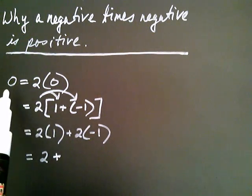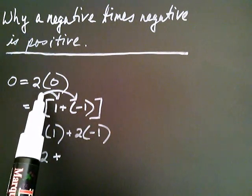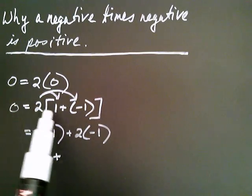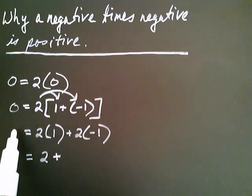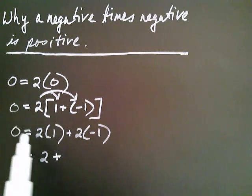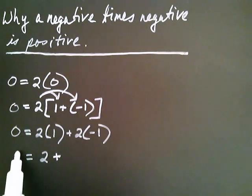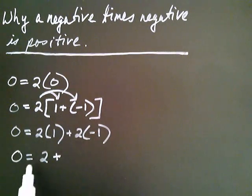Zero is equal to this. And zero is equal to that. And then zero is also equal to this final line right here.